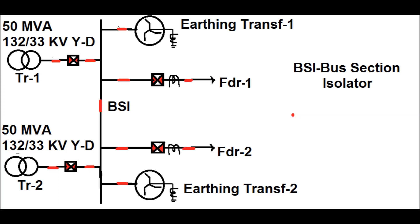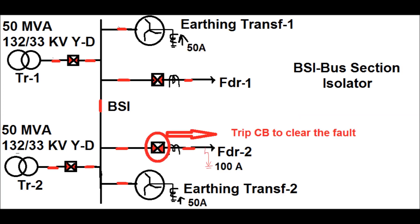In the earthing transformers there exists one CT, called a neutral CT. Now if an earth fault occurs in feeder 2, the CT connected in feeder 2 will sense the fault and send a trip signal to the 86 master trip relay at the feeder 2 panel. This master trip relay sends a trip signal to the circuit breaker associated with feeder 2, the circuit breaker trips, and the feeder fault is isolated.